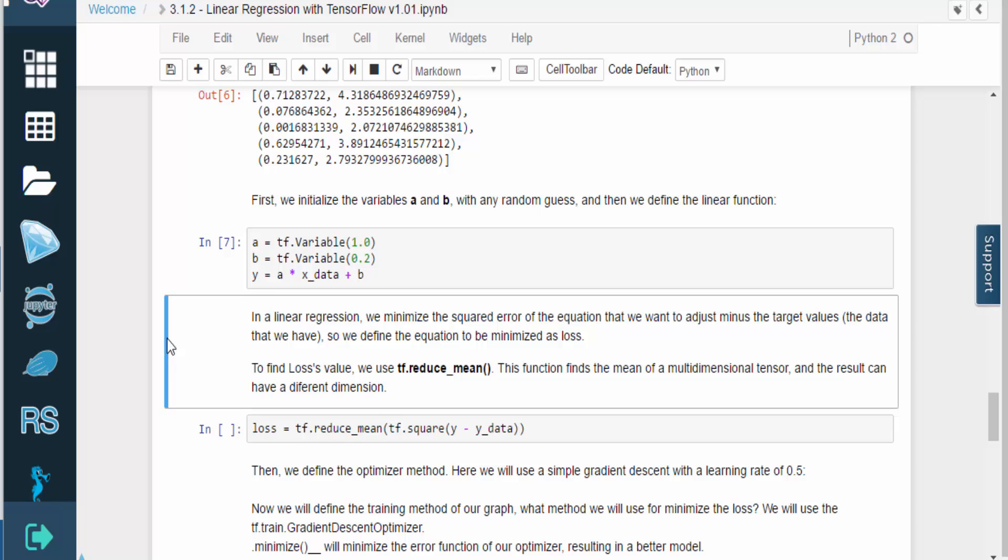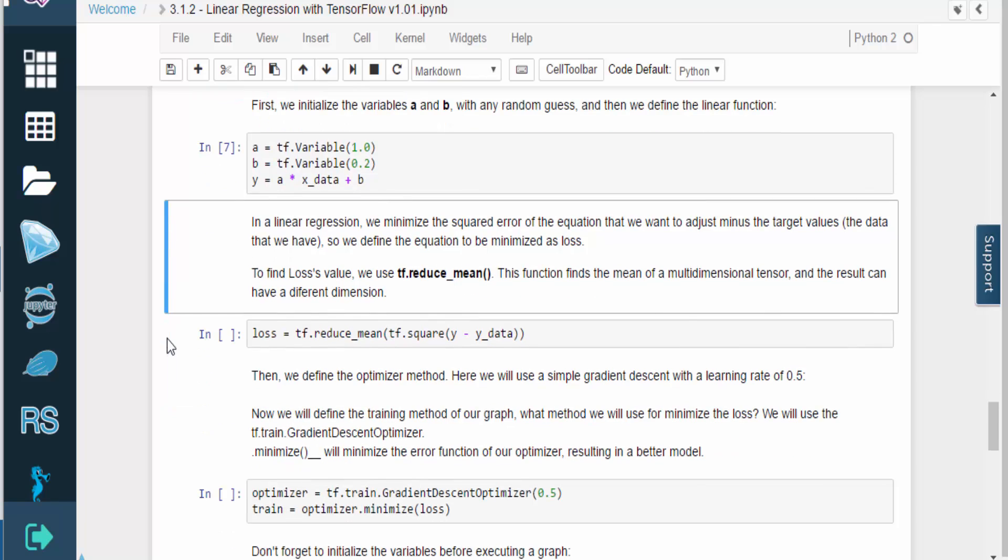For linear regression, we need to specify a loss value that will be minimized during training. We'll define the loss as the squared error, where error is the difference between the model's prediction and the actual value from the data set.